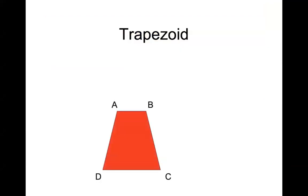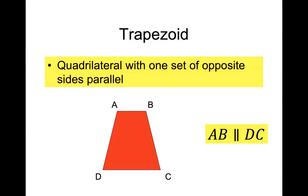Recall that a trapezoid — we had this in the previous chapter — is a four-sided figure, so it's a quadrilateral with exactly one pair of parallel sides. That means two of the sides are parallel to each other. Typically we put the bottom and top as the parallel sides, but it doesn't have to be. Side AB is parallel to side DC, therefore it is a trapezoid. Remember: if you have two sets of opposite sides parallel, it would be a parallelogram.